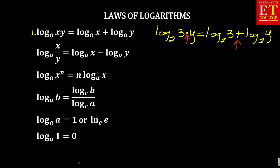The second law is similar to the first law; the only difference is the negative sign. It says log base A of X over Y — in other words, X divided by Y — is the same as log base A of X minus log base A of Y. The simplest thing to remember is: when you see the division sign, it is similar to the negative sign between the logs.